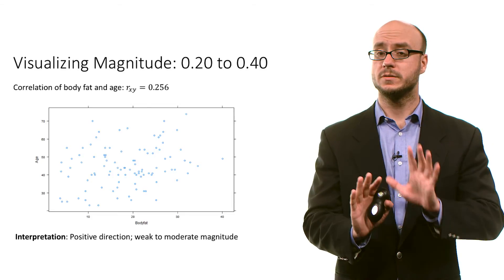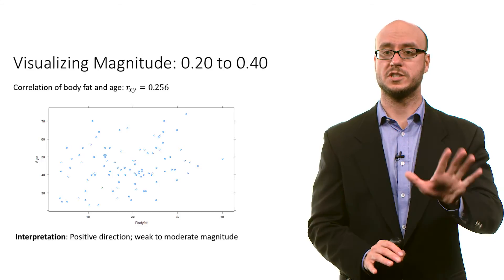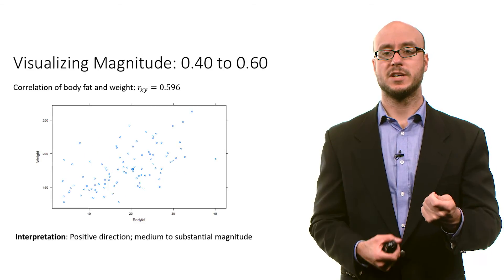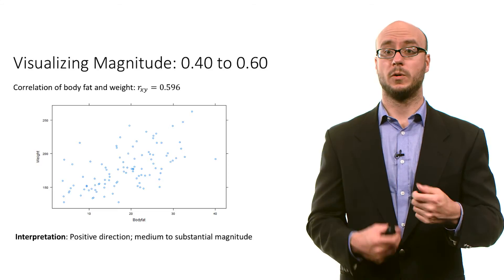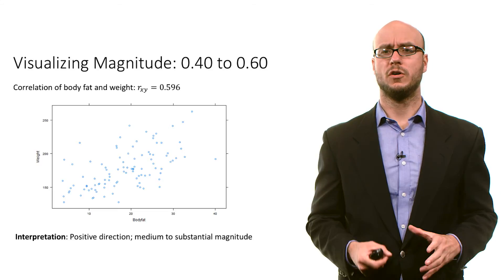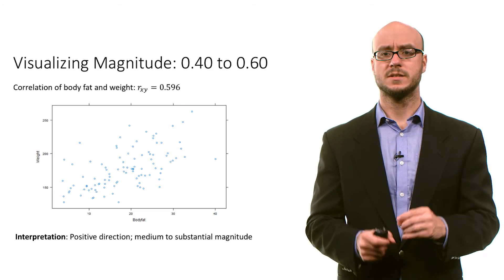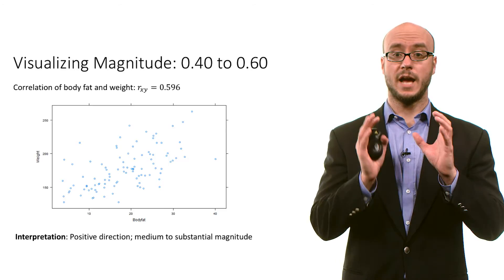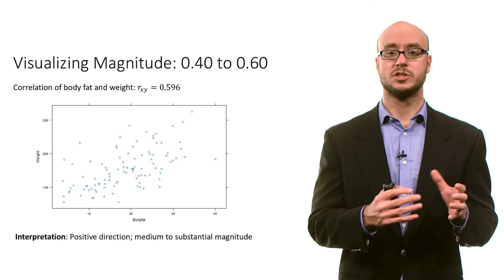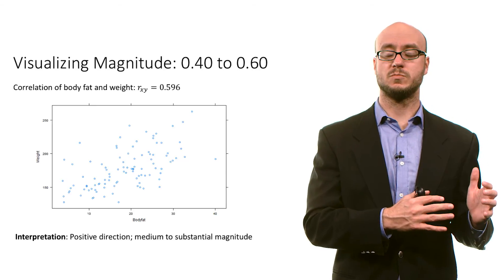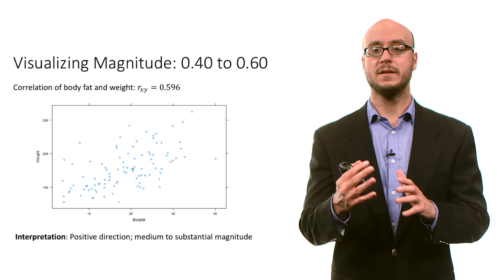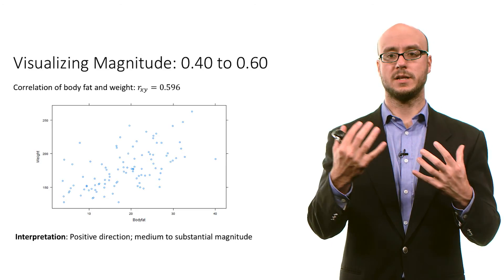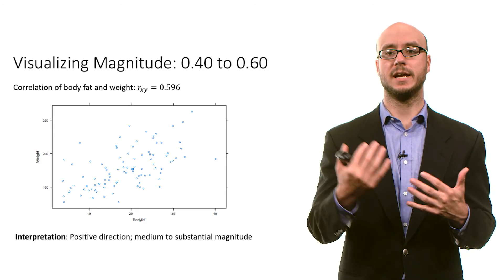But the point is there's some correspondence between the correlation coefficient and the scatter plot. If we look at body fat percentage and weight — what we've been looking at so far — we get this correlation coefficient of 0.596. This is a medium to substantial magnitude and a positive direction. You can see the movement from the lower left to the upper right, suggesting a positive linear relationship, with some clustering and pattern in the data.